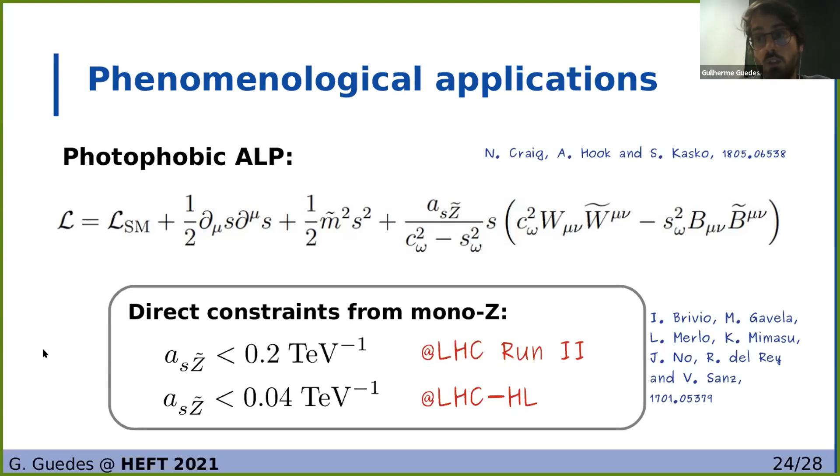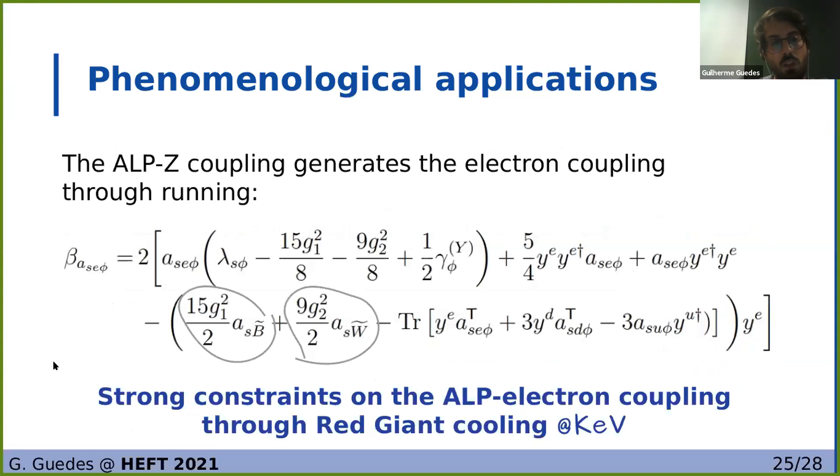So now that we know the full running of our theory, then we can see how we can use it to get new constraints on models and compare them with direct constraints. And to do so we're going to use the photophobic ALP as an example, which is a model in which the ALP doesn't couple to the photons nor fermions. So the best direct constraints come from mono-Z searches, which at the LHC high lumi phase would give a bound of around 0.04 inverse TeV. However, as we saw before, even if the coupling to electrons is zero at the UV, we can generate it through the couplings to the Z that are non-zero in the UV through this running here.